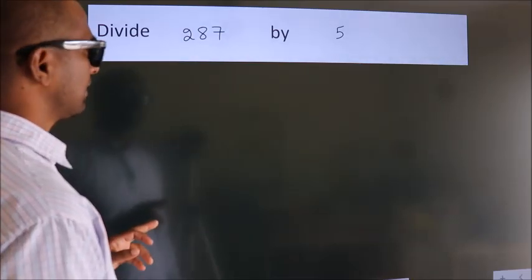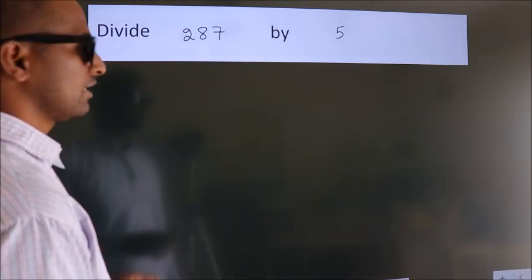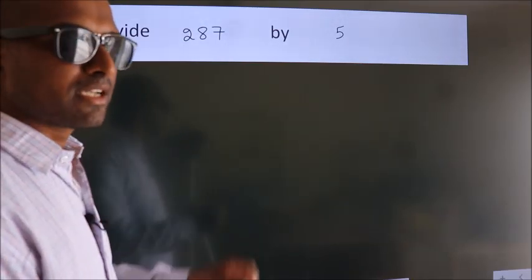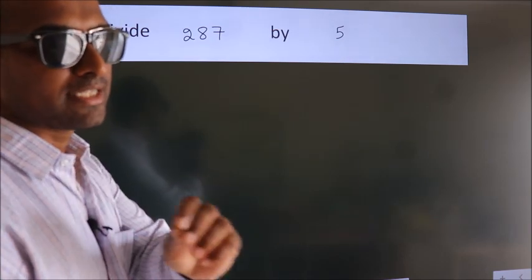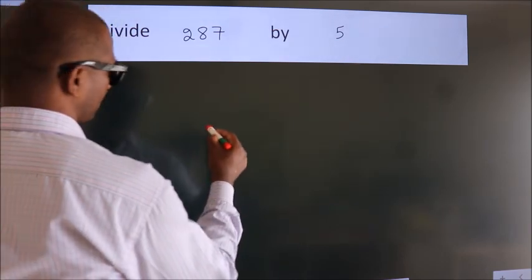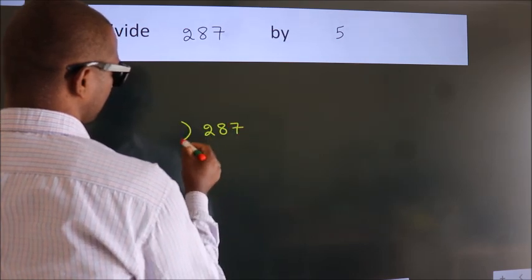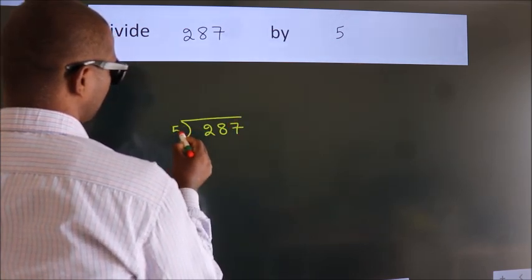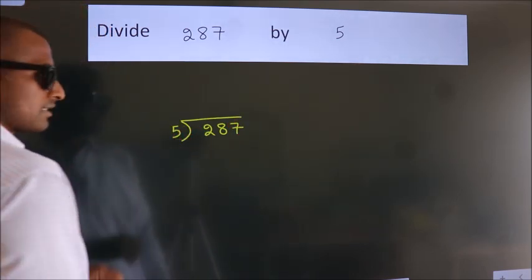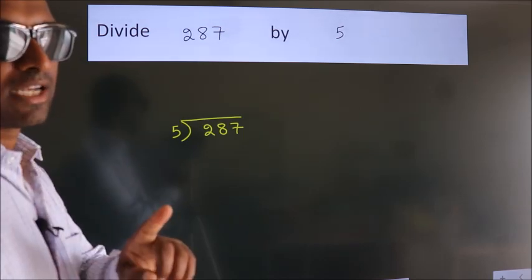Divide 287 by 5. To do this division, we should frame it in this way: 287 here, 5 here. This is your step 1.